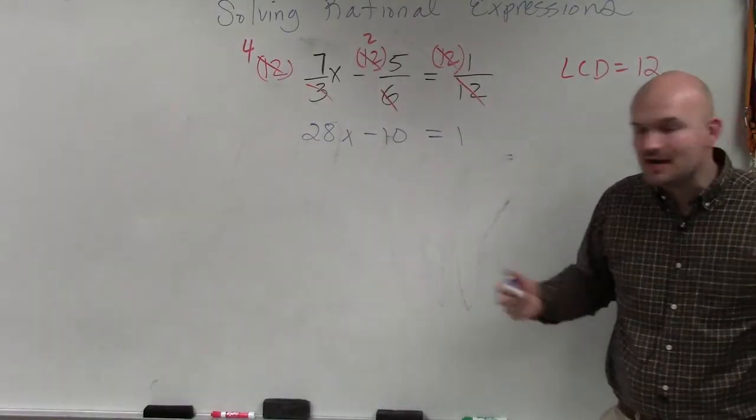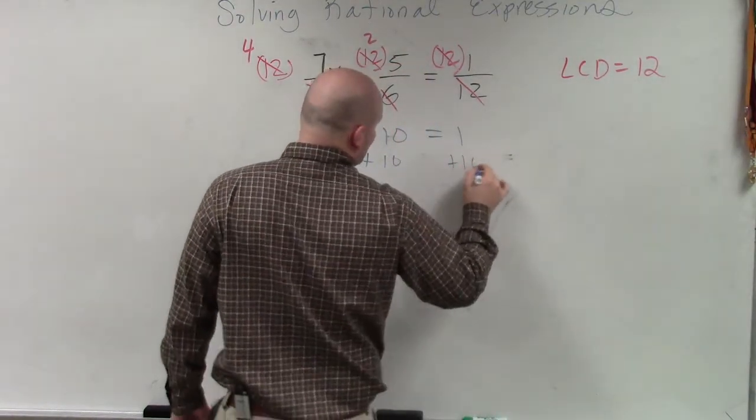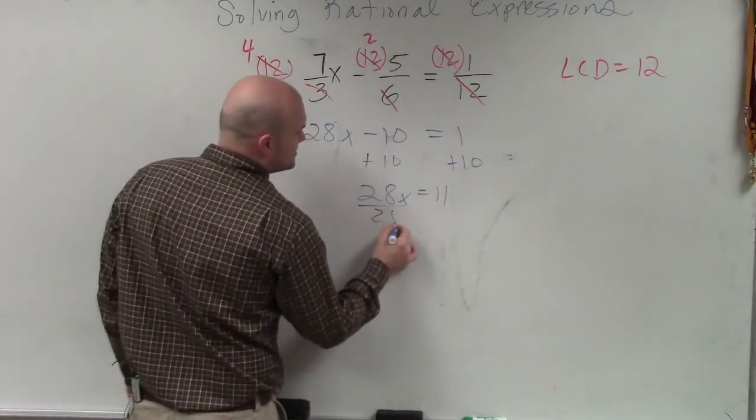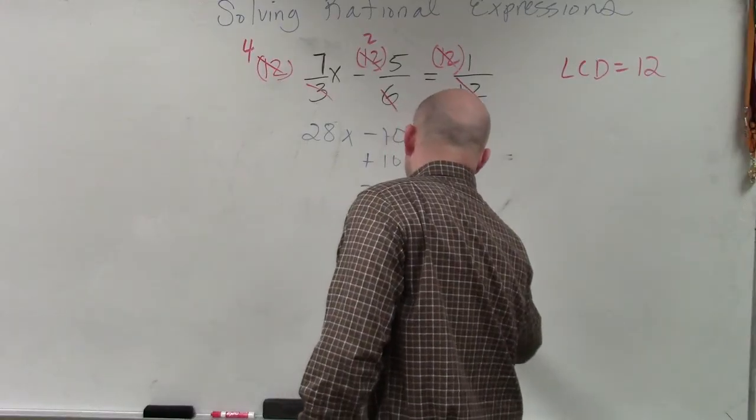Now, we just got to solve for x. So we just undo subtracting 10, so we add 10 on both sides. And we have 28x equals 11. Now, divide by 28, divide by 28. And x equals 11 over 28.